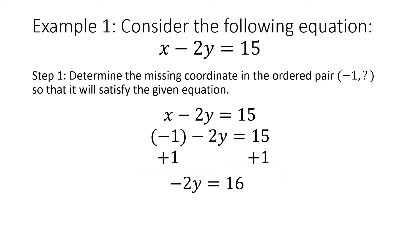My last step here is: since negative 2 and y are being multiplied, we're going to undo the multiplication by dividing. So we're going to divide both sides by negative 2, and we're going to get y equals negative 8, because 16 divided by negative 2 is negative 8. So the missing coordinate would be negative 8 for the y. To write it as an ordered pair, it'd be negative 1 comma negative 8.